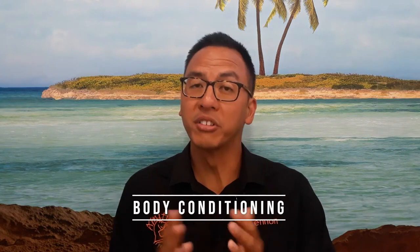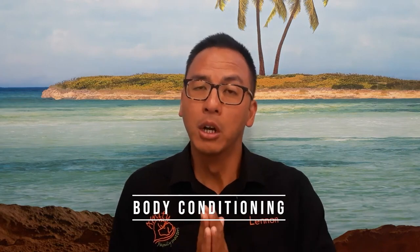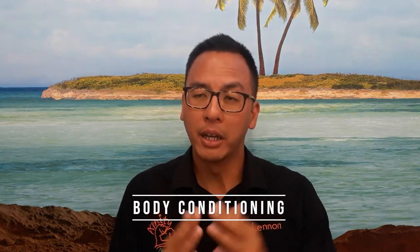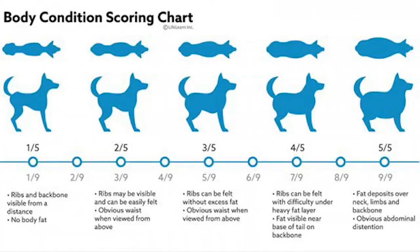So body conditioning — what does that mean? There is a particular scale called a body condition score. The grade is one to nine. There are various scales out there, but the one we commonly use is one to nine, where one is too skinny and nine is too fat and five is ideal.